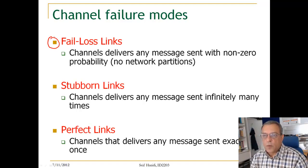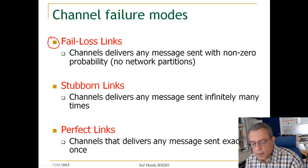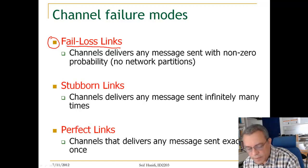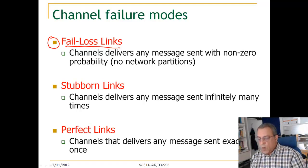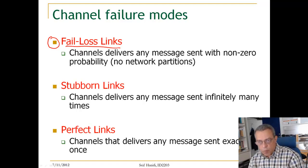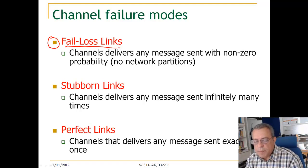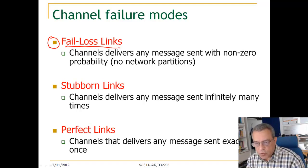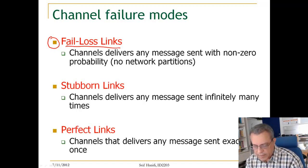One failure mode is what we call a fair loss link. A fair loss link is a channel that delivers any message with a non-zero probability. It means when you send a message from one node to another, the message may arrive or may be lost in the network, but with non-zero probability it will arrive. So if you keep repeatedly sending the same message, it is guaranteed that the message will eventually arrive to the receiver.